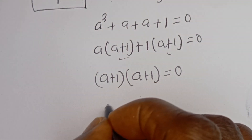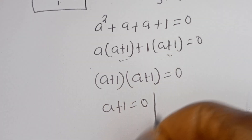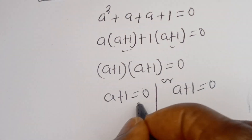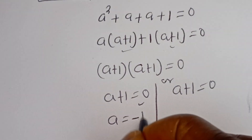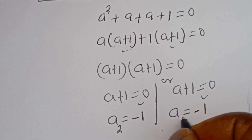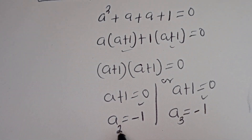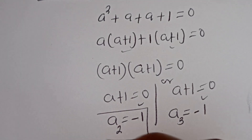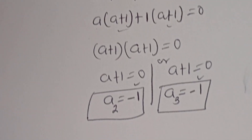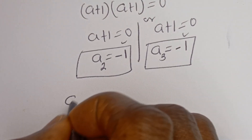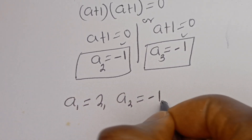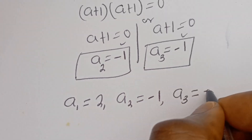Then there are 2 cases: A plus 1 is equal to 0, giving A is equal to minus 1. You can see that both roots of the quadratic give A equal to minus 1. Therefore, A1 is equal to 2 and A2, A3 are equal to minus 1.